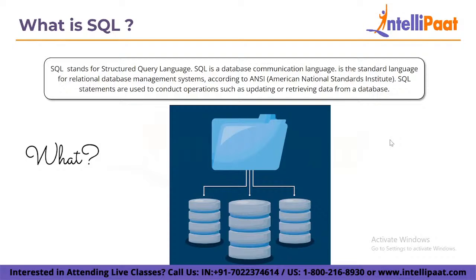Relational Software Corporation, also known as Oracle Corporation, recognized the potential of the concepts described by Codd, Chamberlin, and Boyce in the late 1970s and developed their own SQL-based relational database management system with the goal of selling it to the United States Navy, Central Intelligence Agency, and other US government agencies. Relational Software released one of the earliest commercially available SQL implementations, Oracle version 2, for VAX machines in June 1979. SQL is especially beneficial when dealing with structured data which includes relationships between entities and variables. SQL has major advantages over previous read/write APIs like ISAM and VSAM — it first introduced the concept of accessing multiple records with a single command, and second, it removes the need to declare how to access a record, such as with or without an index.